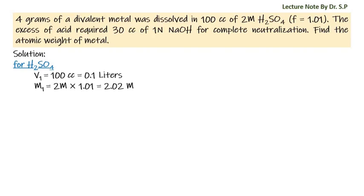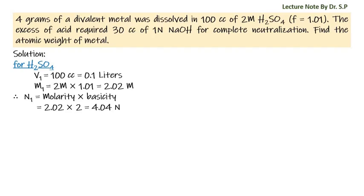We have to convert molarity into normality. Therefore, normality of sulfuric acid N1 is equal to molarity into basicity, that is equal to 2.02 into 2, that is equal to 4.04 N.